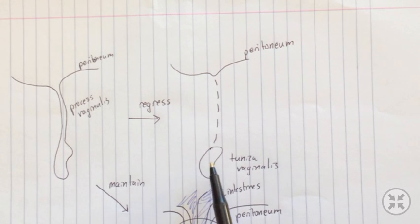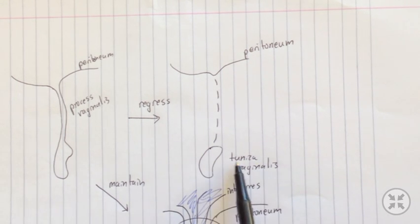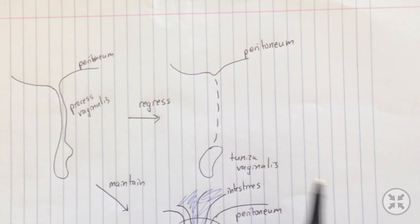This is the tunica vaginalis which actually covers the testes, it's normal. You can think of it as a tunic or a cloak surrounding the testes.